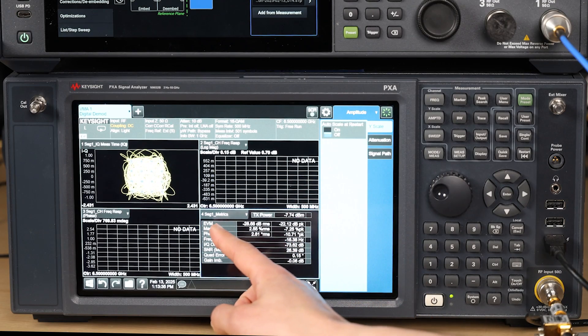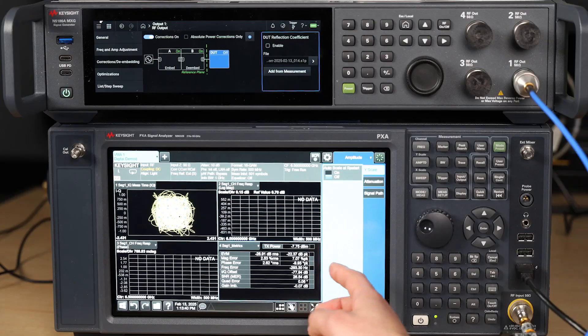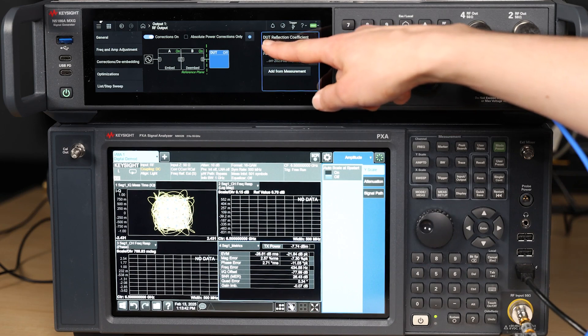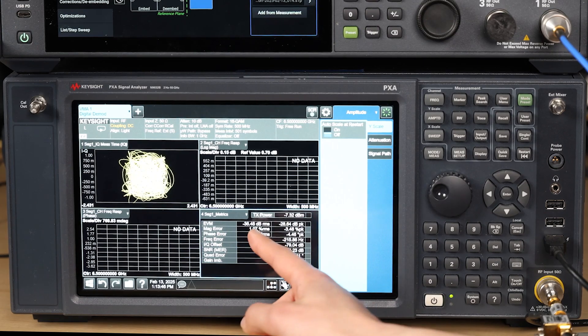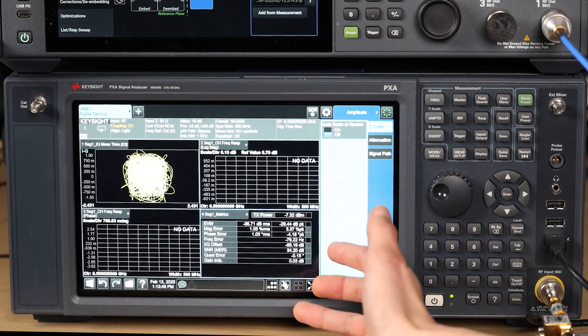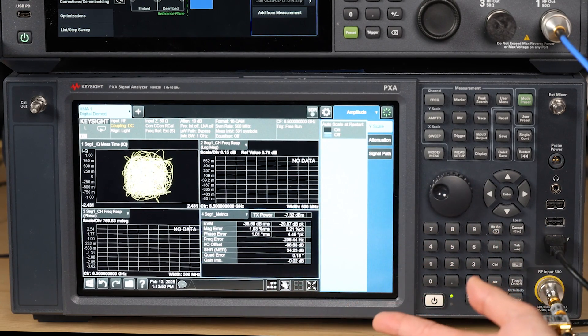So let's look at what our EVM is right now. It's about minus 29 dB. And what happens when I turn the embedded reflectometer on? How much improvement am I going to get? You can see that I'm getting about 7 dB of improvement on my EVM measurement, which is really good, especially with unequalized EVM.